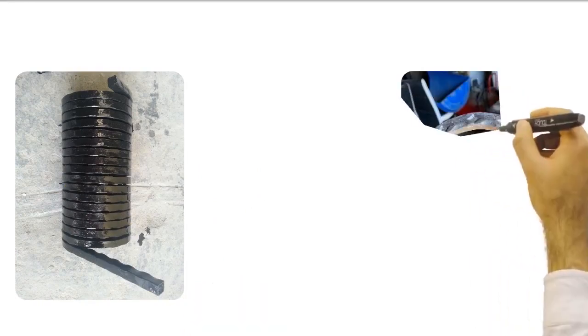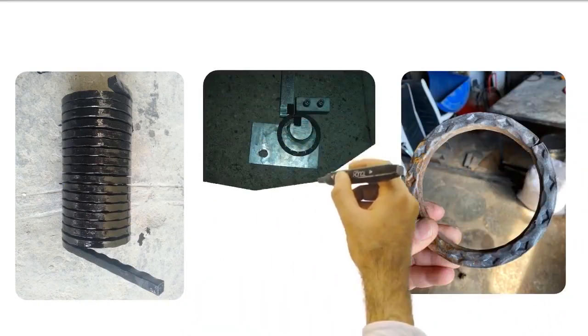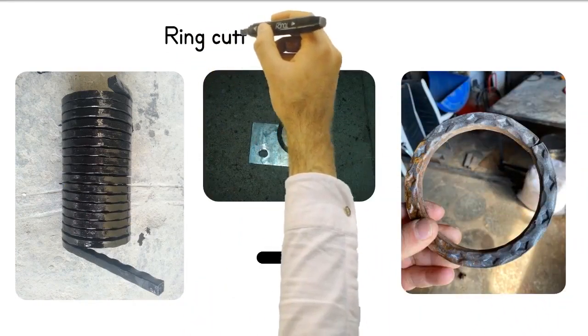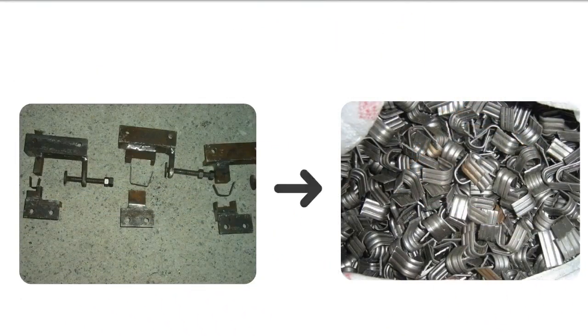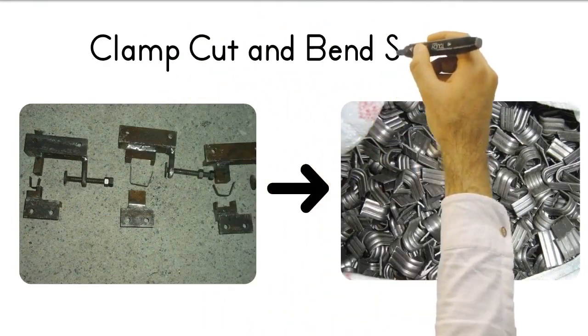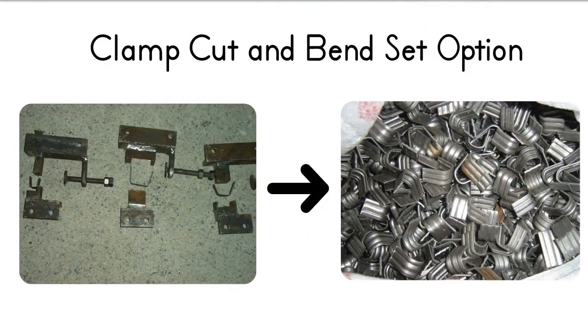Another of the molds that we can offer as an option with the machine is the ring cutting apparatus and knife set. We offer the necessary die set as an option so that you can cut the traced wrought iron clamp strips in the automatic stop system.